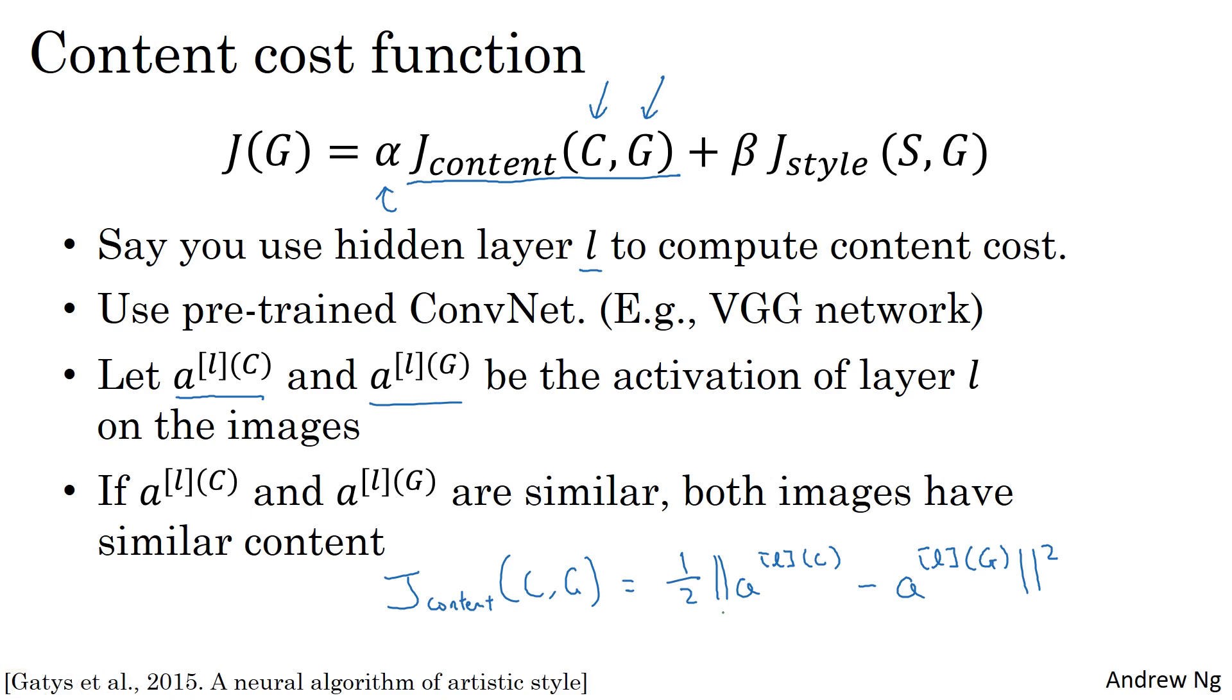Just to be clear, I'm using this notation as if both of these have been unrolled into vectors, so this becomes the squared L2 norm between them after you've unrolled them both into vectors.